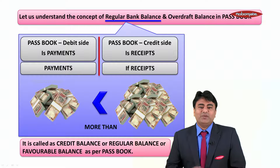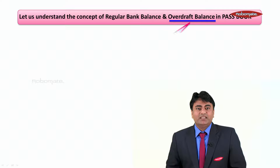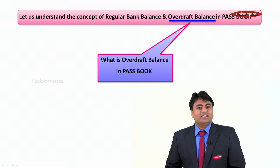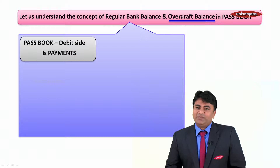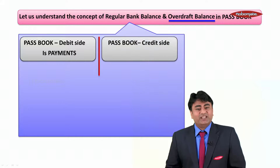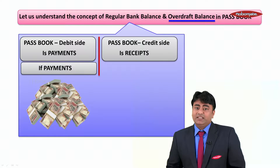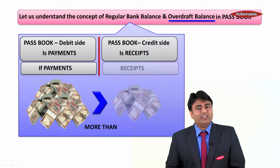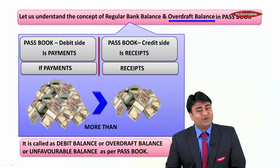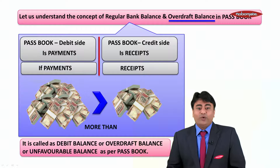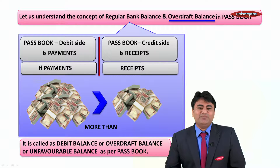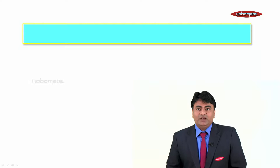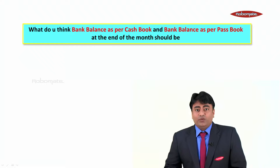Similarly, what is overdraft balance in the pass book? The pass book debit side is payments and the credit side is receipts. If payments are more than receipts, it is called a debit balance, or overdraft balance, or unfavorable balance as per the pass book.